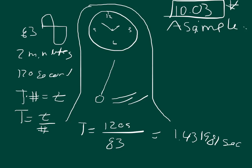So that's the time for each individual oscillation, meaning that it travels, starts here, goes here, and all the way back. That's one time.